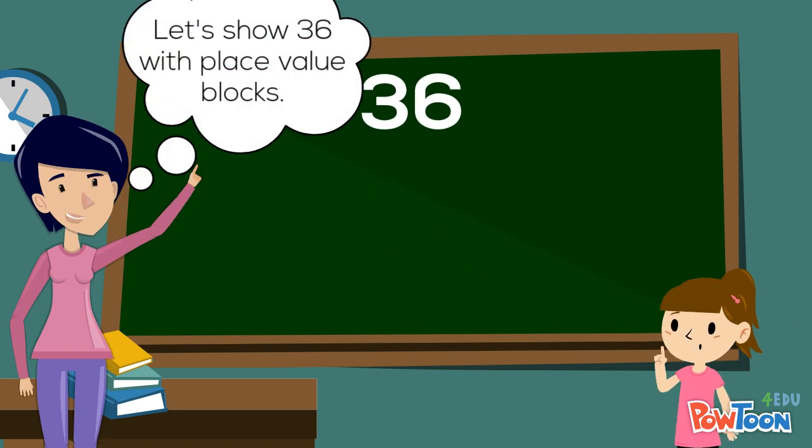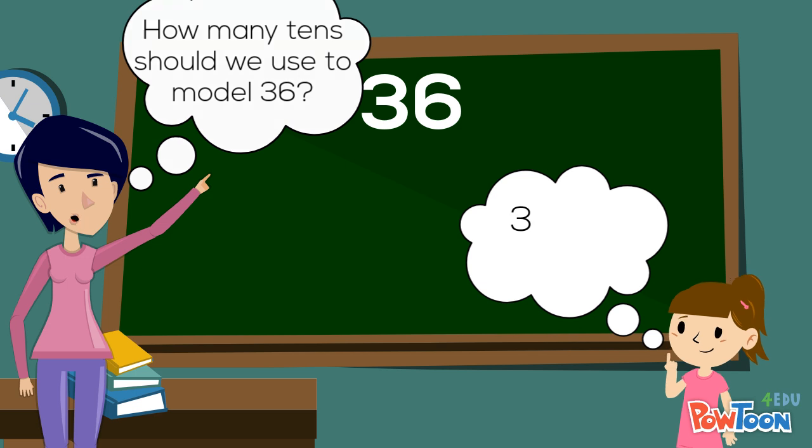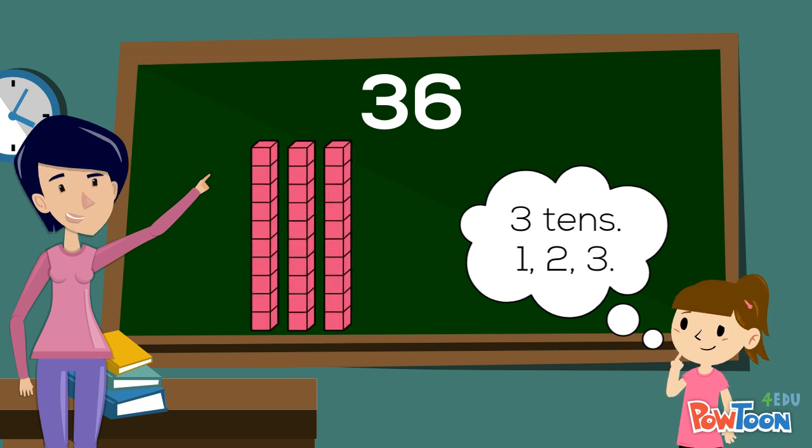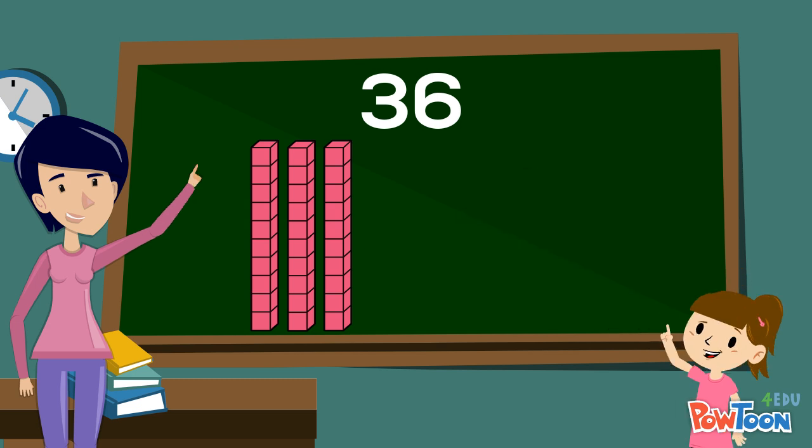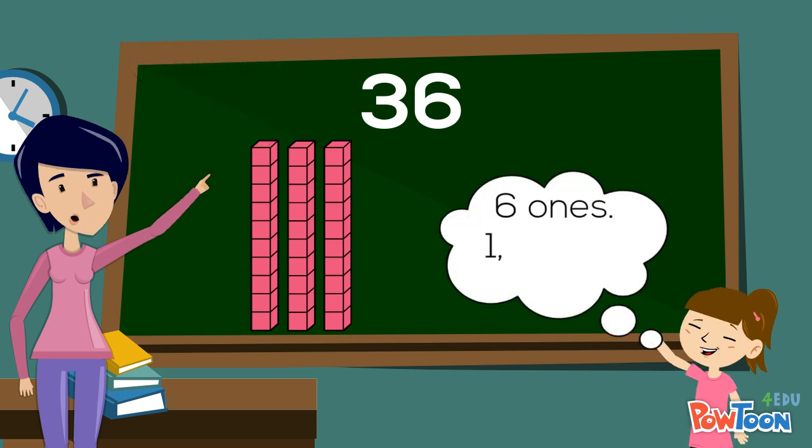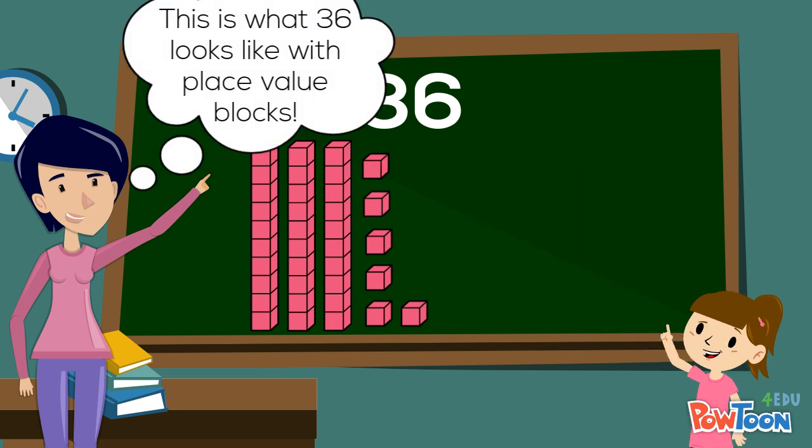Let's show 36 with place value blocks. How many tens should we use to model 36? Three tens. One, two, three. How many ones should we use to model 36? Six ones. One, two, three, four, five, six. This is what 36 looks like with place value blocks.